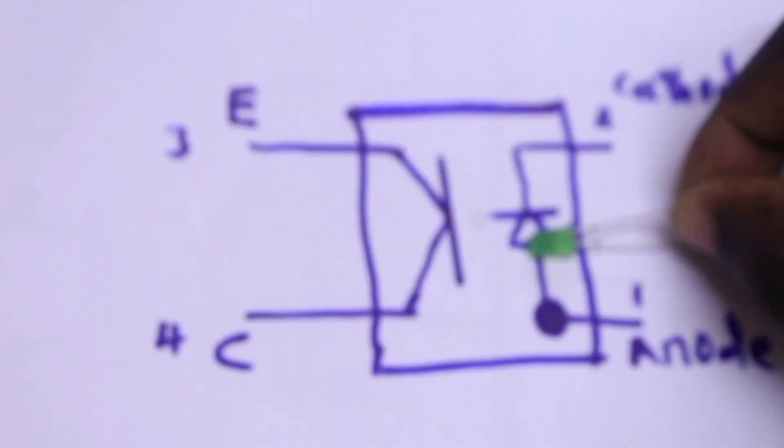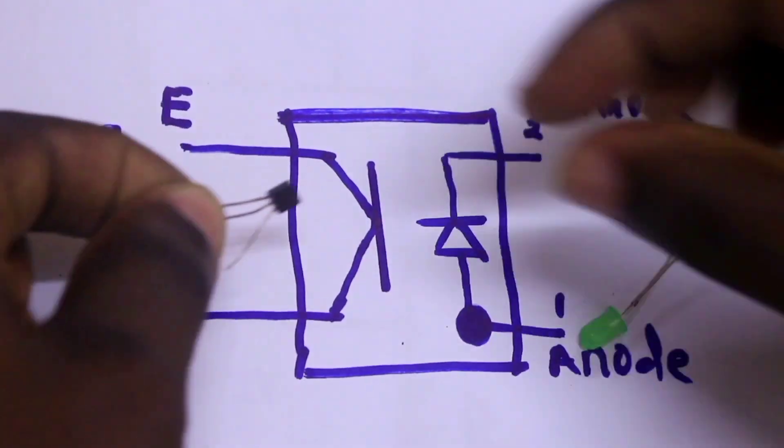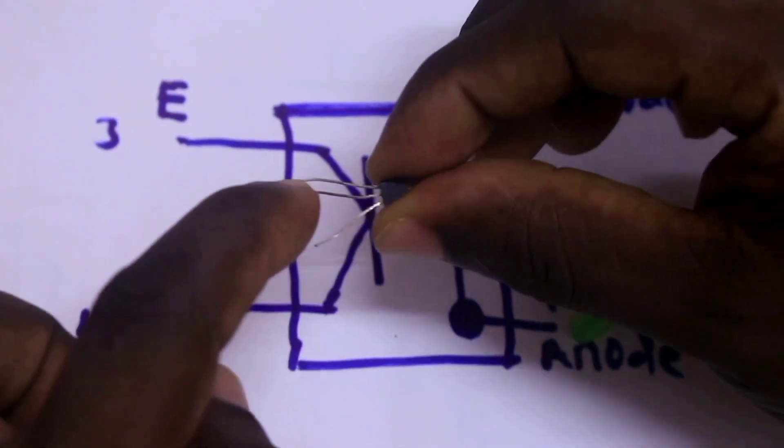Inside the optocoupler, there is a diode, that is the light-emitting diode, like this one. And there is also a transistor, a transistor with the emitter, collector, and the base.